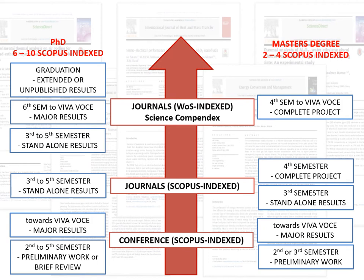Normally I expect PhD students to publish at least one Web of Science indexed journal. For Master's degree it is not compulsory, but one or two Scopus indexed journals is good. However, even my final year degree students have been able to publish in Web of Science indexed journals. If you plan your work carefully, you can successfully publish in Web of Science journals. You should aim for Web of Science indexed journal publication.